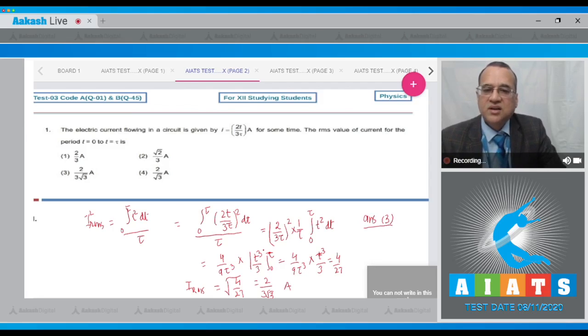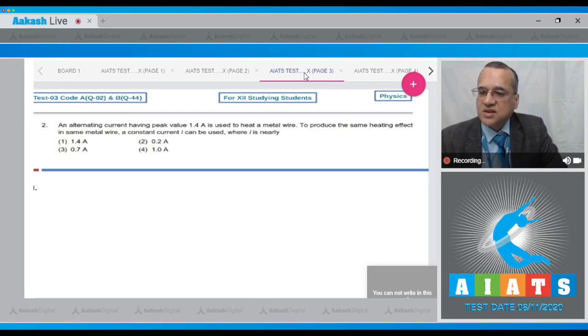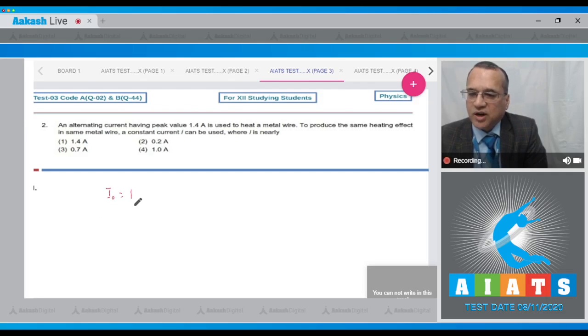Let us move to the next problem. Question number 2 says that an alternating current having the peak value of 1.4 ampere is used to heat a metal wire. To produce the same heating effect in the same metal wire, a constant current can be used. This constant current i is nearly 1.4 ampere, 0.2 ampere, 0.7 ampere, and the last option is 1 ampere. Now dear students, it is given that the peak value of alternating current, so i naught is given equal to 1.4 ampere.